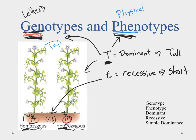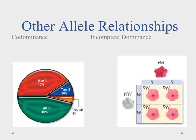Because we're talking about just whether it's a capital letter — and it's always going to show that capital phenotype — or whether it's going to be a lowercase letter, we call this simple dominance. It's real simple: if it has a capital T, the capital T shows. If it doesn't have a capital T, then it's lowercase t, lowercase t — a homozygous recessive condition — and we're going to see that recessive trait, such as a short plant. So simple dominance works out pretty easily. There are other allele relationships as well.